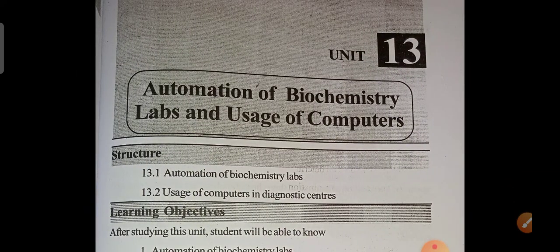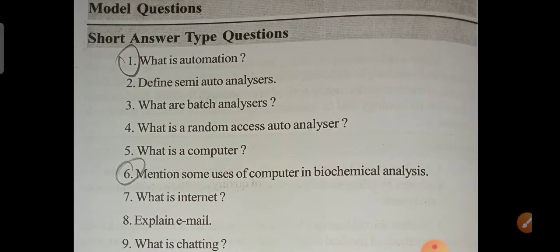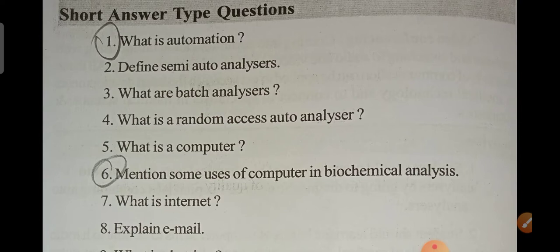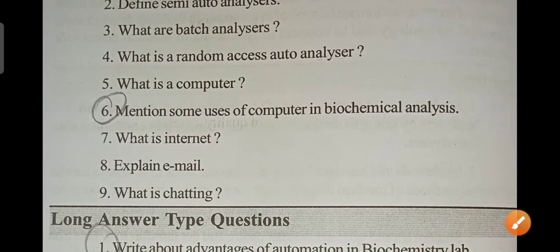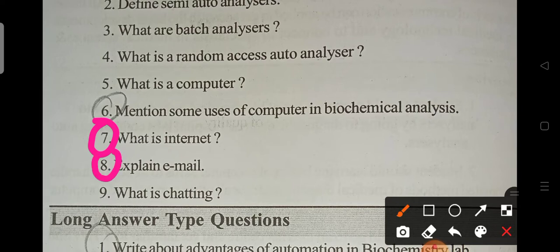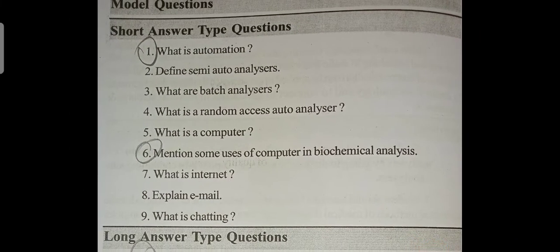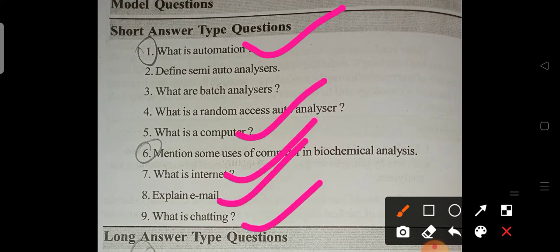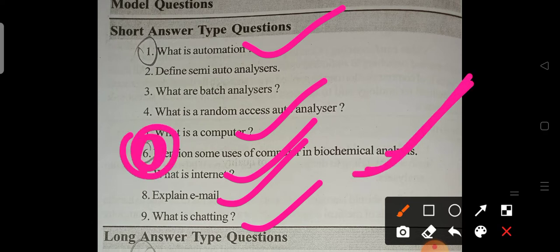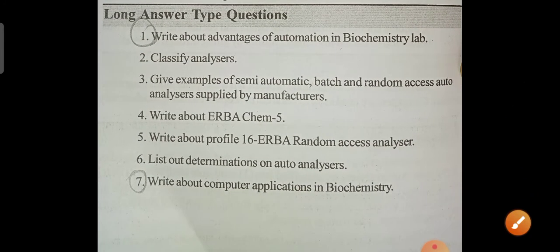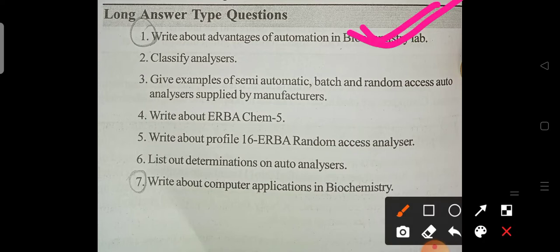Unit 13 is Automation of Biochemistry Labs and Usage of Computers. Important short answer questions are: what is automation, what is a computer, what is the internet, what is email, what is chatting, and mention some uses of computers in biochemical analysis. For long answers: write about the advantages of automation in biochemistry lab, list determinations on auto analyzers, and write about computer applications in biochemistry.